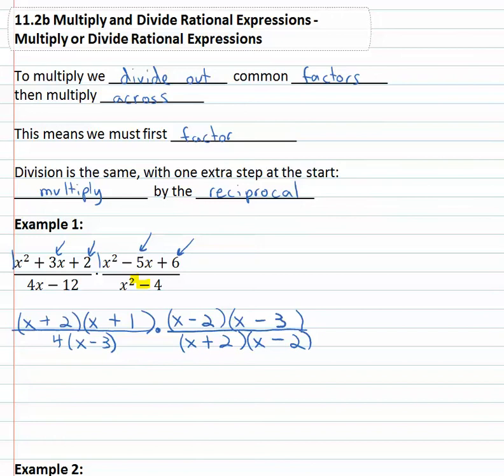But now that it's factored, all we have to do is identify the common factors and divide them out. You'll see there's an x minus 3, there's an x plus 2, there's an x minus 2. Dividing out of the numerator and denominator, all that we have left is x plus 1 in the numerator and 4 in the denominator.